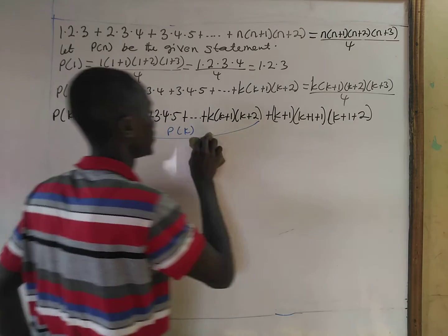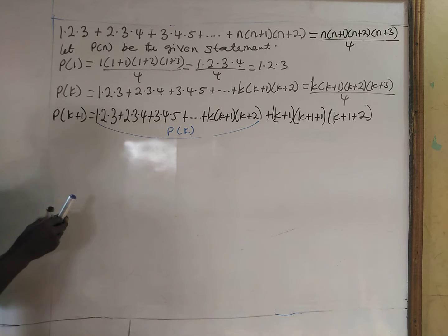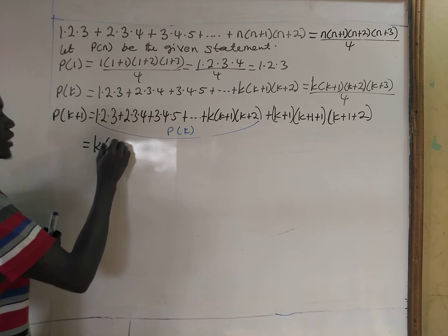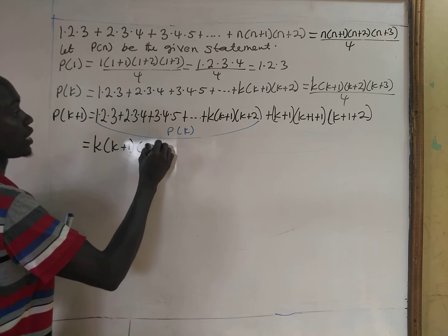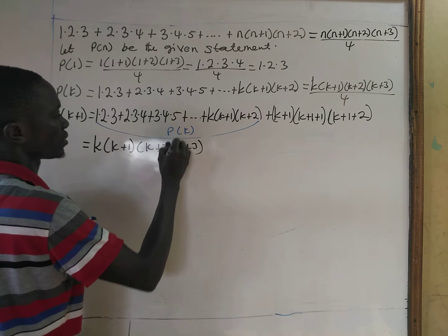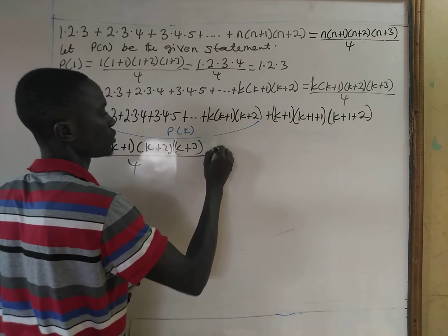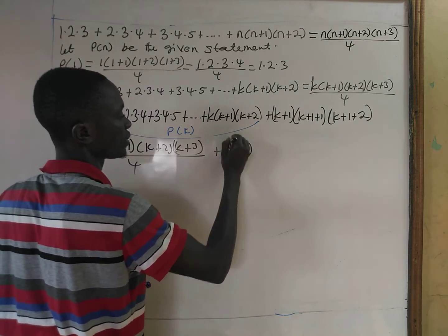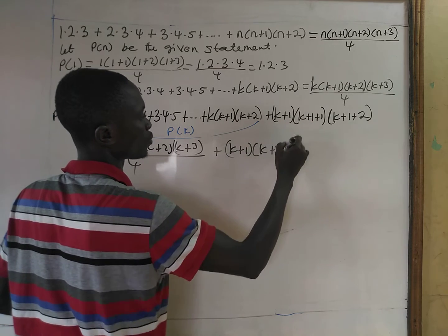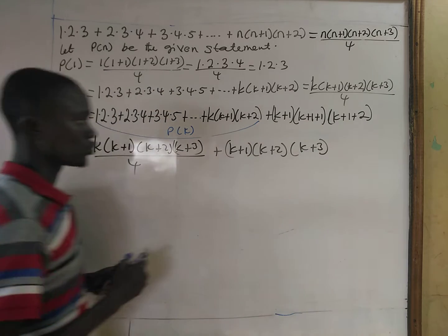Now, we have P(k) equal to k(k+1)(k+2)(k+3) divided by 4. And we add the next term, which is (k+1)(k+2)(k+3) — that is (k+1) times (k+1+1) times (k+1+2).